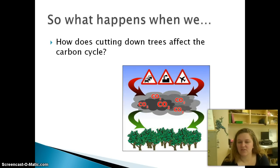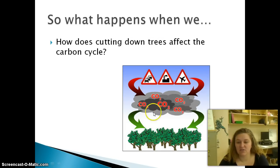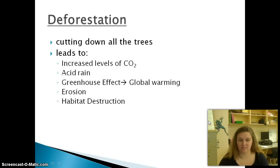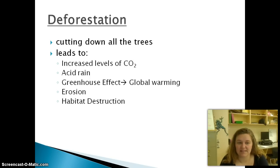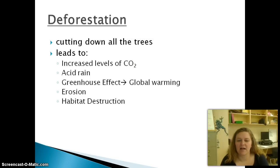How does cutting down trees affect the carbon cycle? Trees take CO2 out of the atmosphere and produce oxygen for us. CO2 gets into the atmosphere through us. If we cut down all the trees, we're going to have increased levels of CO2, which means we're going to have acid rain, more global warming, more erosion, and habitat destruction.